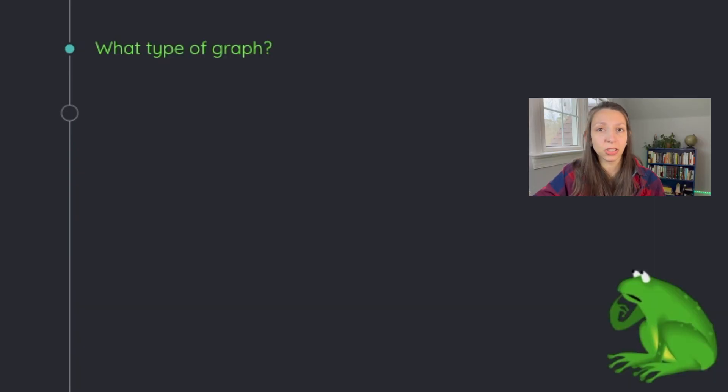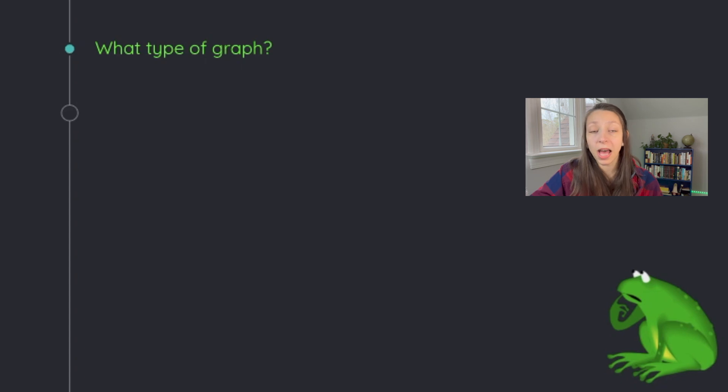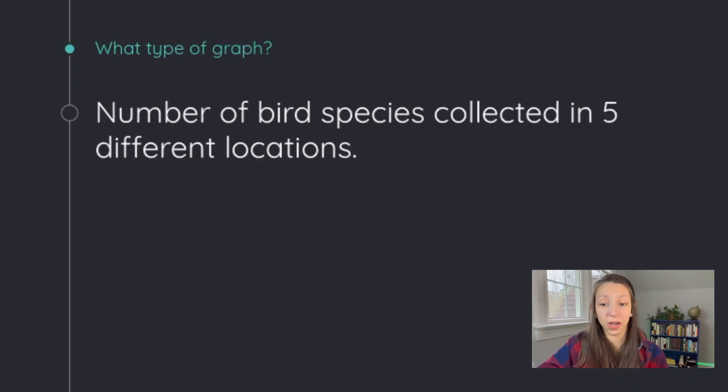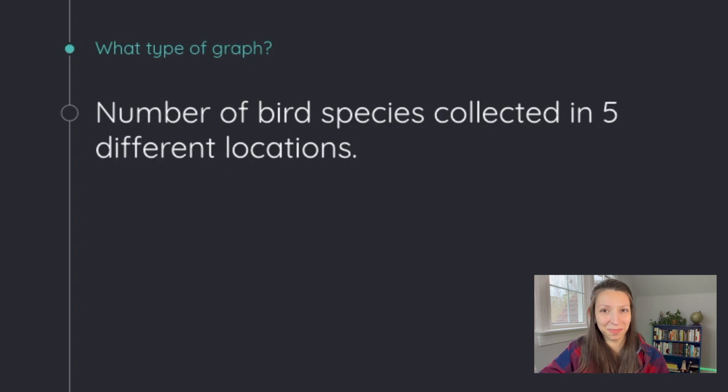So let's do a little practice. I'm going to describe a different type of data on each slide, and you're going to try to guess what type of graph would be best for that data. Now, you can argue different types of graphs for any of these data sets, but I've chosen the one that I think would be the most appropriate for each particular situation. Let's start with this one. The number of bird species collected in five different locations. Think about it for a minute. A bar graph would probably be appropriate in this scenario. Because we're comparing different categories, our five different locations, and one numeric factor, the number of bird species, we could make five different bars for our locations and then graph each bar with the number of species in each location.